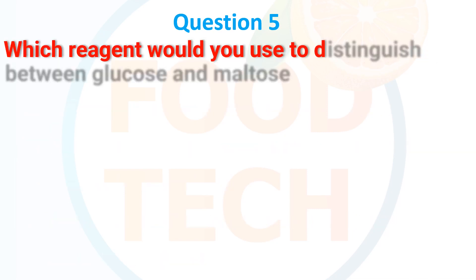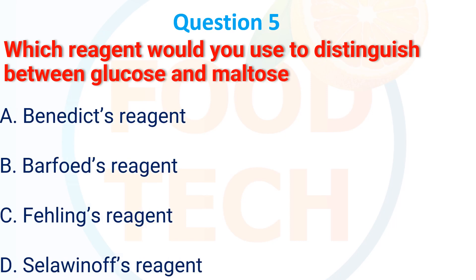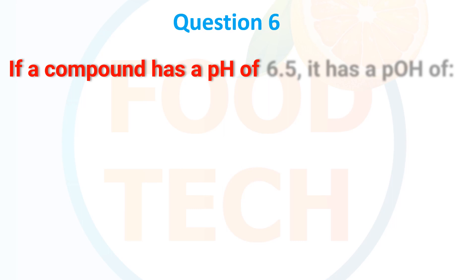Which reagent would you use to distinguish between glucose and maltose? A. Benedict's reagent, B. Barfoed's reagent, C. Fehling's reagent, D. Seliwanoff's reagent. The correct answer is Benedict's reagent.